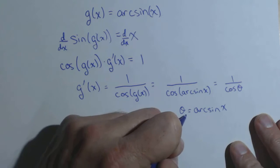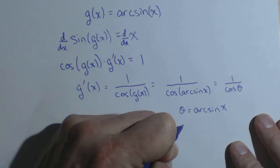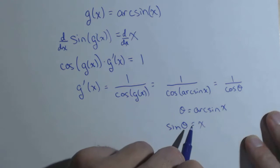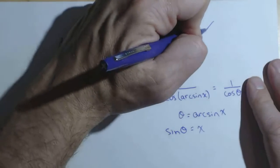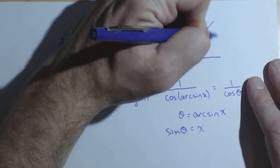And this here says that sine of theta equals x, again just an inverse property. So what I'm going to do is use that to draw a right triangle.